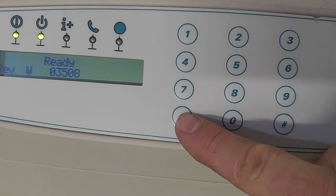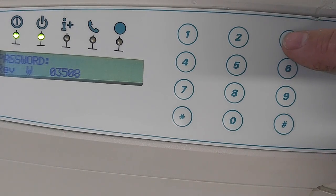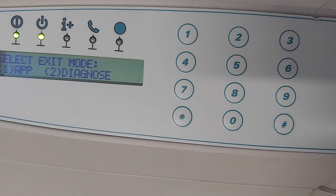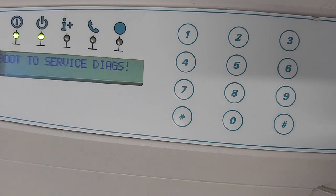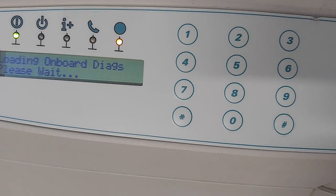So we're going to go into the Diagnostics mode. We're going to hit star and then pound, the password is 3253, and we're going to hit 2 for Diagnostics, and we're going to hit pound at the service prompt.